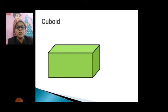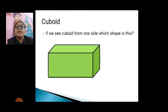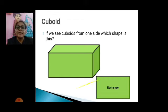Now this is the cuboid. Cuboid, if you see it from one side, it looks like a rectangle.